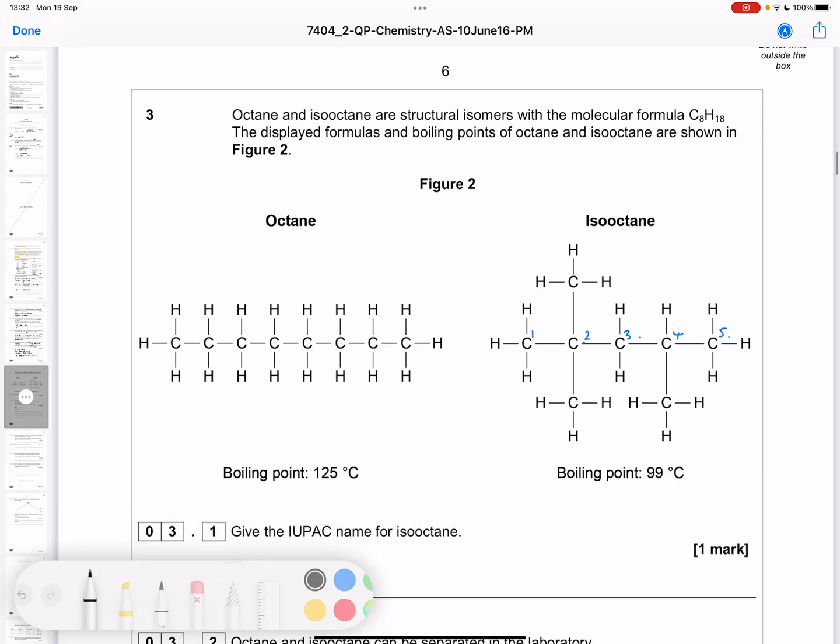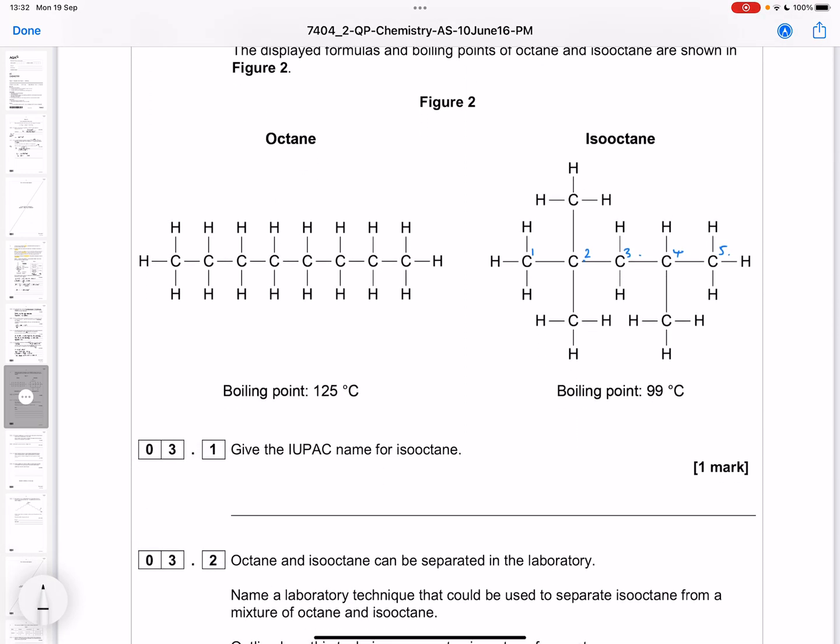Because it's a 5 chain, the stem is going to be pent at the end of the name. We know this is an alkane because all the carbon-carbon bonds are single and there's no other functional group, so this is going to end pentane.